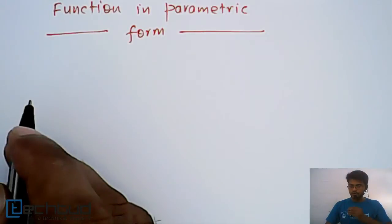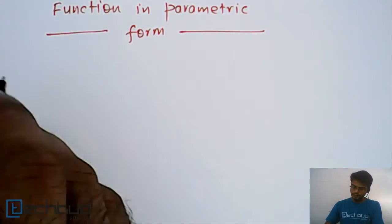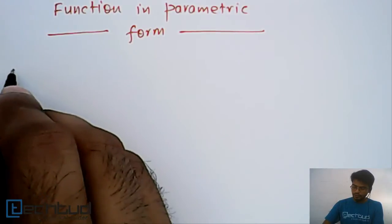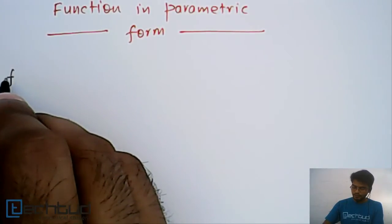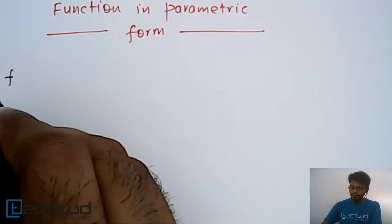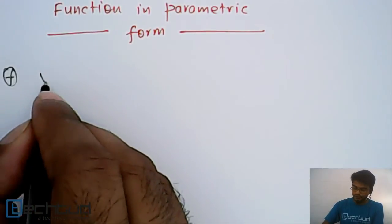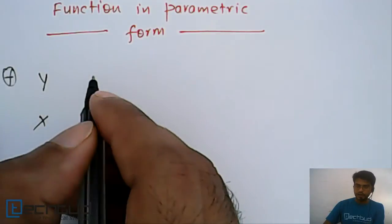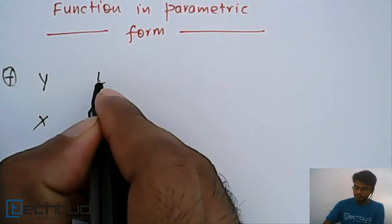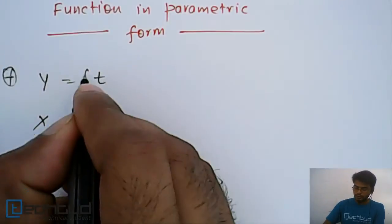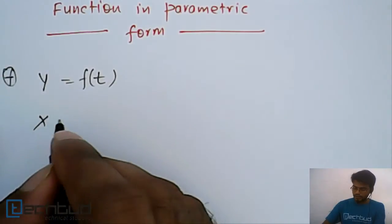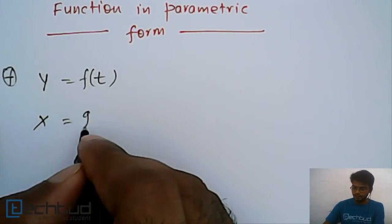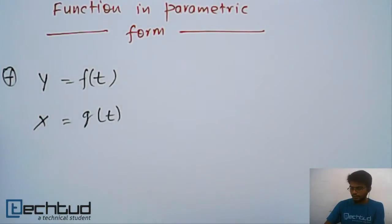So what do you mean by parametric form? It's something like this: if we have a function, let's say y and x, both are in form of some another variable which is, let's say, t. So y equals f(t) and x equals g(t).